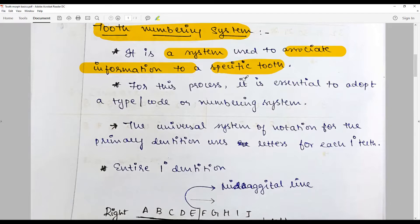Without any linguistic, geographical, or political interference, for this process it is essential to adopt a unique type or code or numbering system. Such systems are called tooth numbering systems.